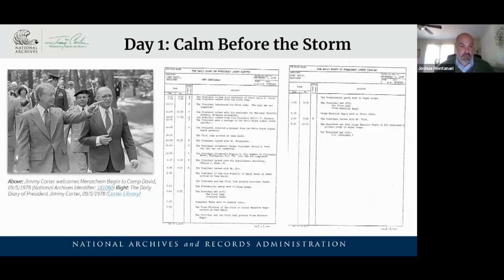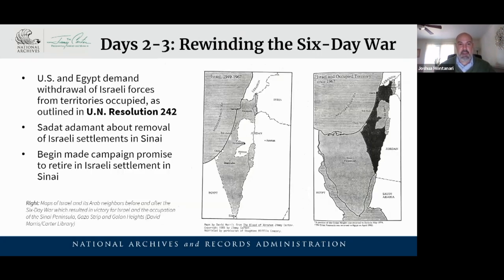One of those daily diary entries — this is from the first day, September 5th. Really not a whole lot going on: everybody is just arriving. We see Menachem Begin doing that, with President Carter showing him around the grounds. Later, President Sadat also arrives. Everyone gets a quick tour, goes back to their cabins, and gets ready for the next day. In the next two days, Carter really starts digging in with Sadat and Begin, more or less trying to rewind the consequences of the Six-Day War in 1967.